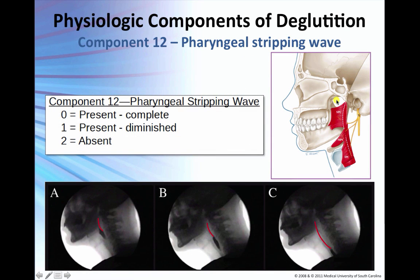Pharyngeal stripping wave: you're looking at the progressive contraction of the superior, middle, and inferior pharyngeal constrictor musculature — three potential scores. This is tricky because most speech-language pathologists are not used to looking at it. Once you start looking at it, you'll be amazed at the role the pharynx plays, not only in swallow impairment, but in the ability for this mechanism to adapt when other pressures and displacement of the hyoid and larynx are impaired.